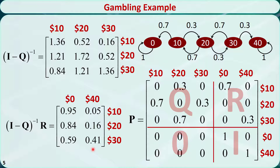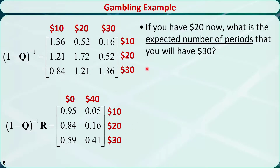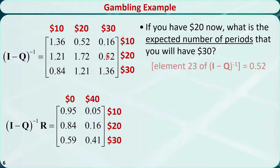Now let's answer some questions. The first question: if you have $20 now, what is the expected number of periods that you will have $30 in hand? The answer is element 2,3 of the fundamental matrix, which is 0.52.